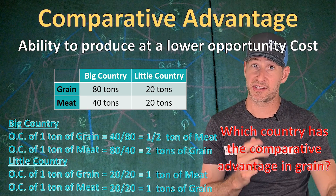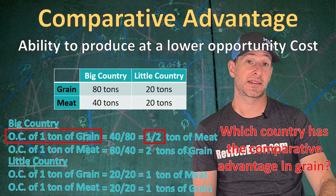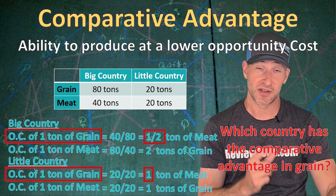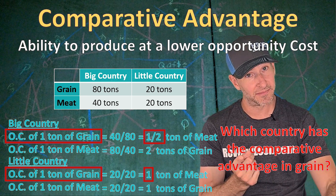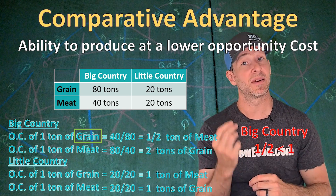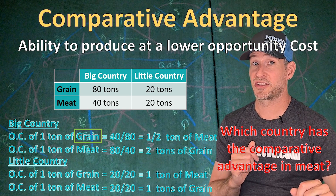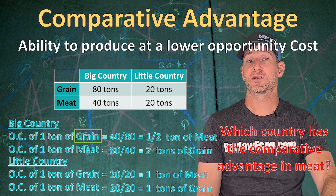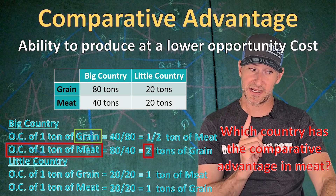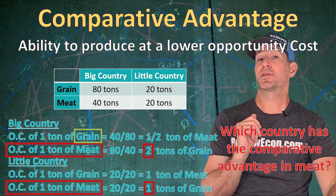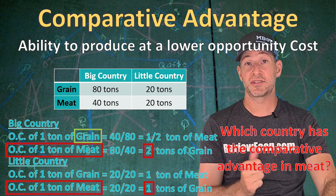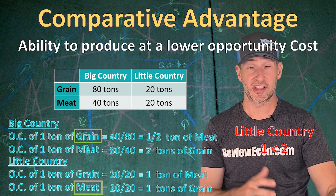Comparative Advantage is the ability to produce something at a lower opportunity cost. Which country has the comparative advantage in grain? Big Country has an opportunity cost of half a ton of meat, while Little Country has an opportunity cost of one ton of meat. Since half a ton is lower, Big Country has the comparative advantage in grain. For meat, Big Country's opportunity cost is two tons of grain while Little Country's is one ton of grain — so Little Country has the comparative advantage in meat.